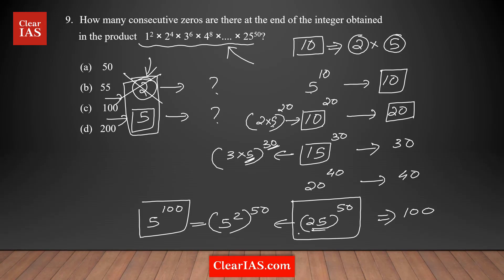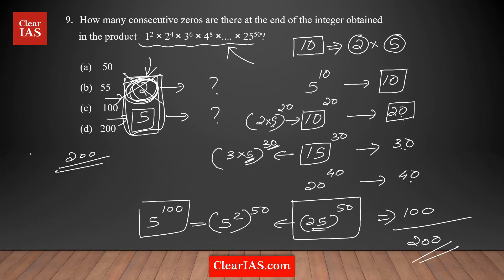Now we add all the 5s: 10 + 20 + 30 + 40 + 100 = 200. So there are 200 fives in the product. Since there are definitely enough 2s, we get 200 pairs of 2 and 5, meaning 200 tens. Therefore, the number of consecutive zeros at the end of the product is 200, and option D is the right answer.